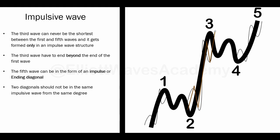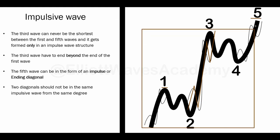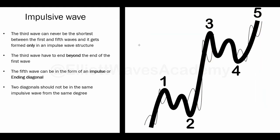Wave 3 cannot be the shortest between Wave 1 and Wave 5. This means it can be shorter than Wave 1 or shorter than Wave 5, but it cannot be shorter than both. Usually it is the longest wave in the whole structure.